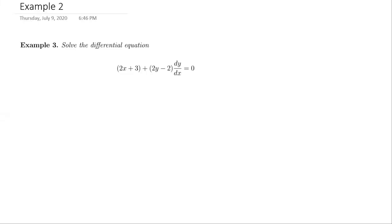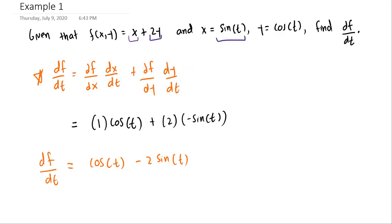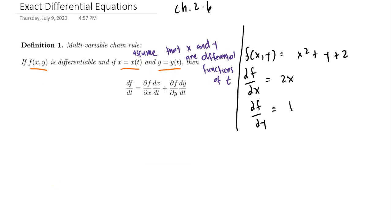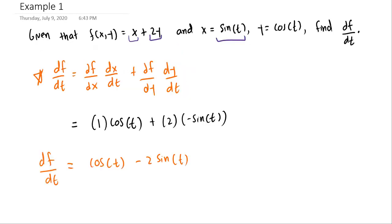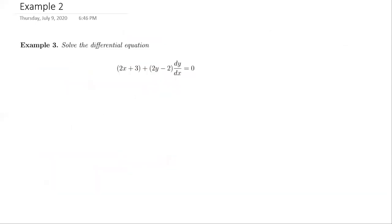Hello class. On this video we'll continue on section 2.6. In the previous video, we gave the definition for the multivariable chain rule — how to take the derivative of a function with respect to t, where f is a function of two variables x and y, given that both x and y are functions of a single variable t. The interpretation doesn't really matter for us; we went over an example about how to use this and now we can actually apply it.